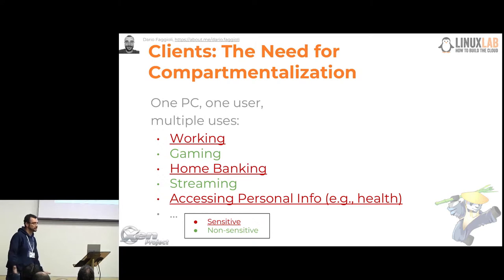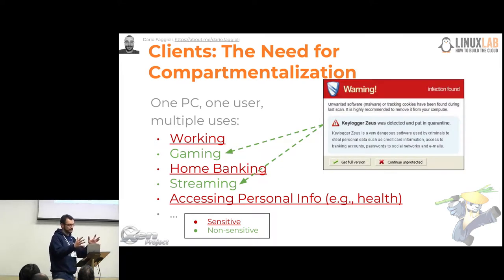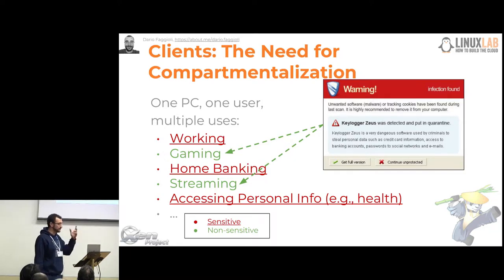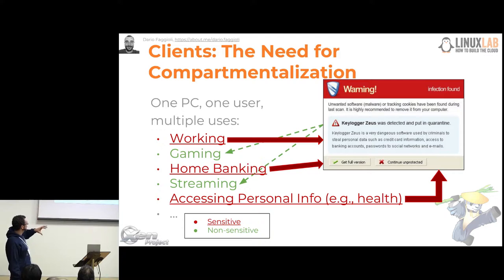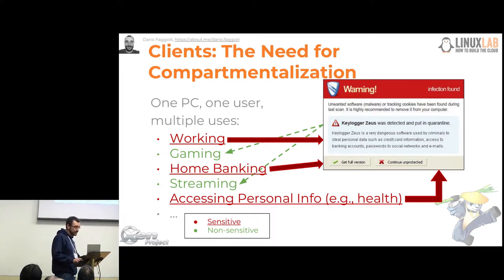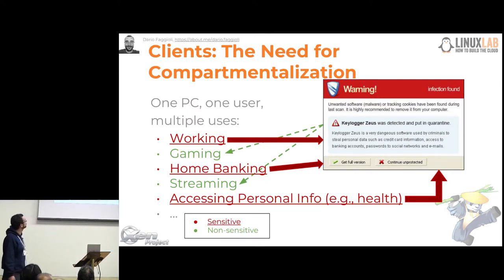Some of these activities are sensitive or critical — I can tell because of the data they have access to and deal with; some others are not. However, since the laptop is always the same, what happens if I catch a virus or malware while gaming, watching a live stream, or browsing? It happens that the whole system is infected, and so the things I do and the data I access while doing critical and sensitive activities are also at risk. What could be useful would be some degree of compartmentalization.